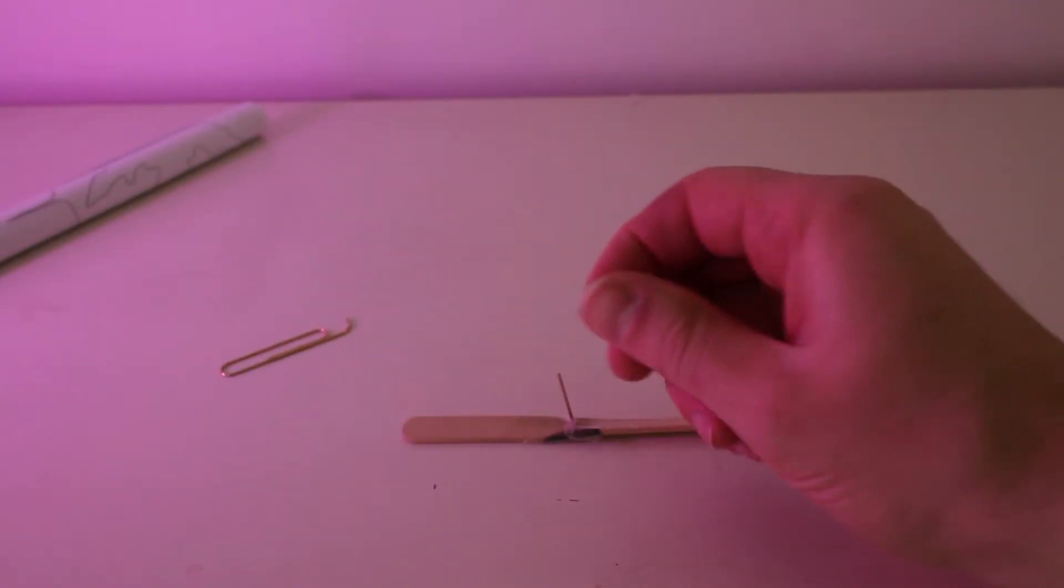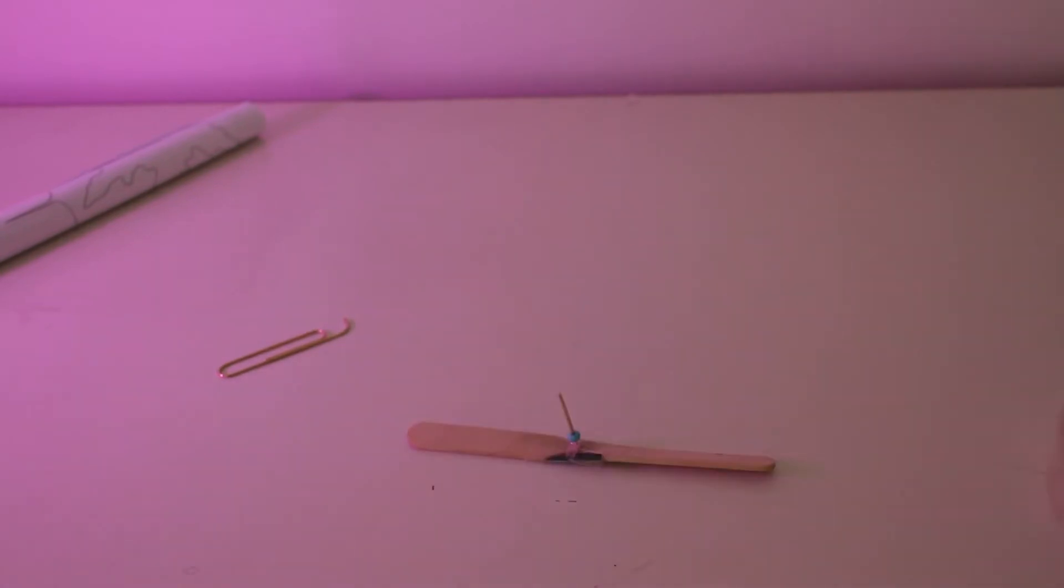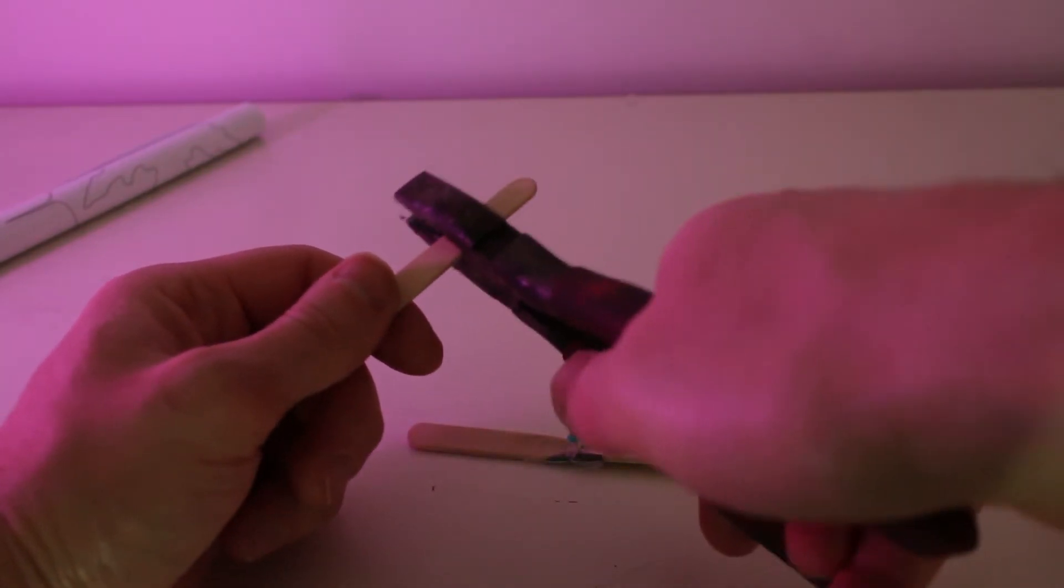Now take your bead and place it on this piece of paper clip. We're going to create a very simple bearing. Now cut the end off a spare icy pole stick.